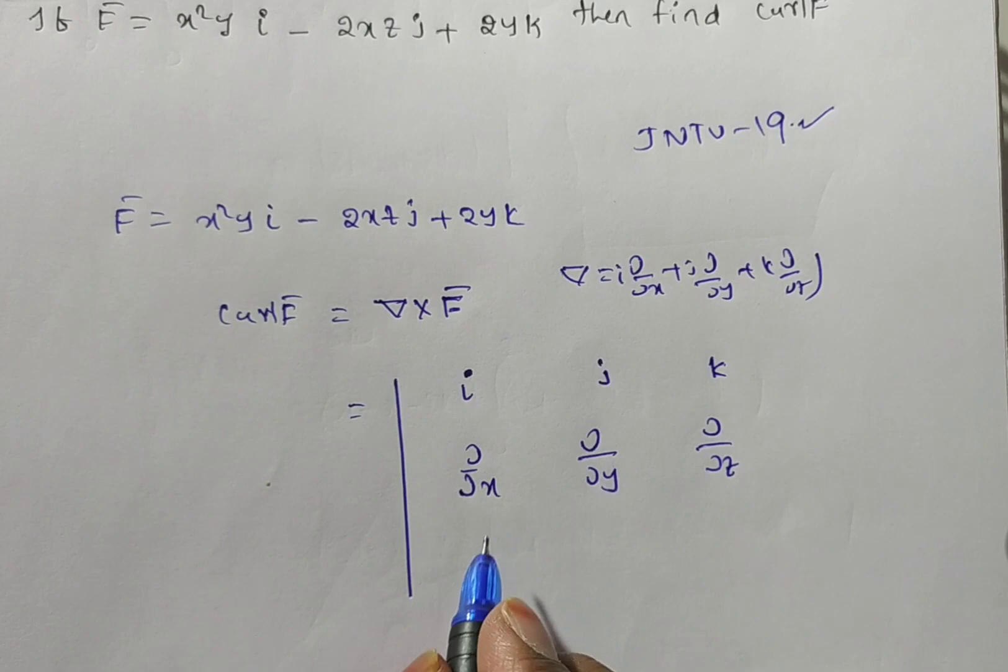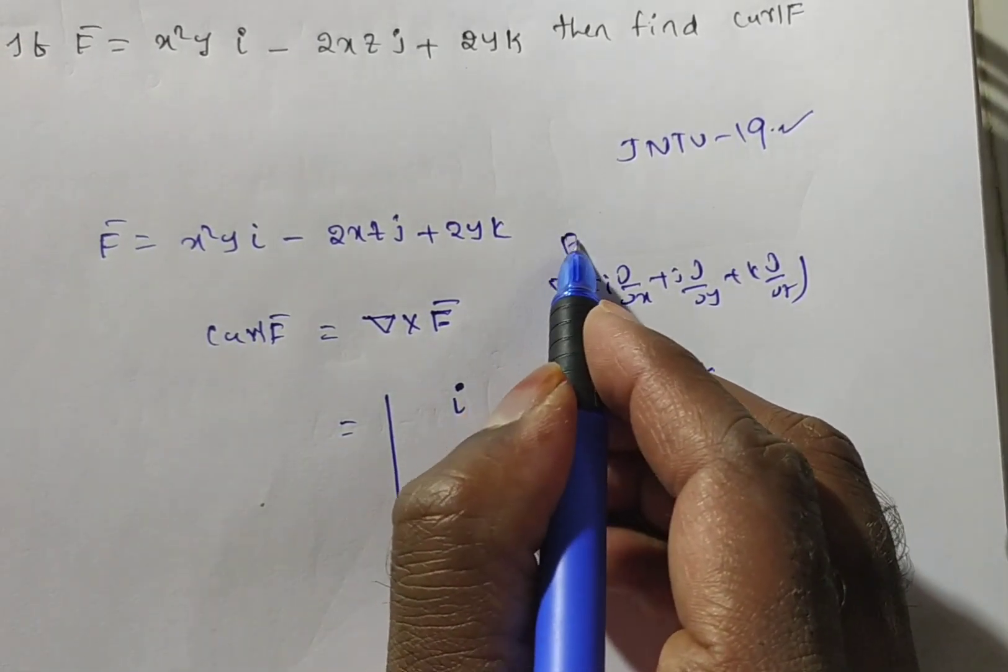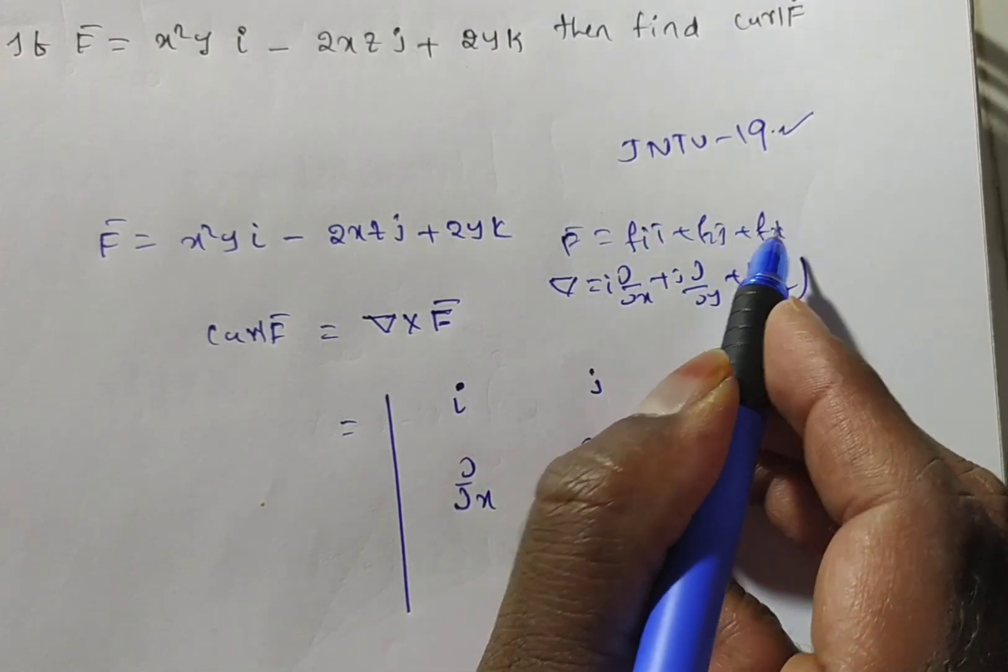Now F bar is nothing but f1, f2, f3. Actually F bar is equal to you have f1 i plus f2 j plus f3 k.